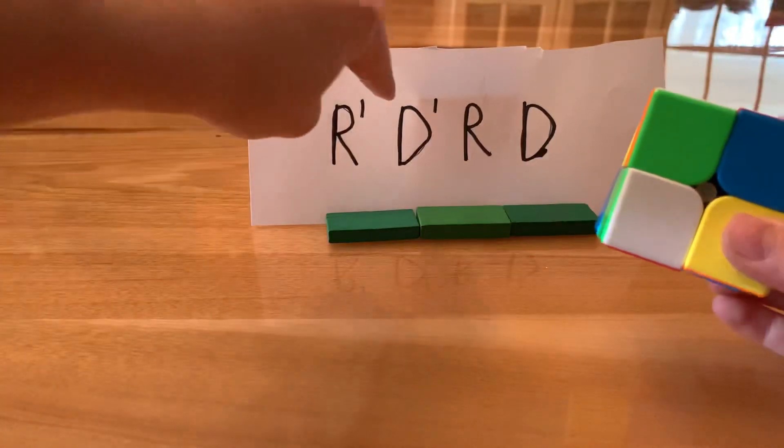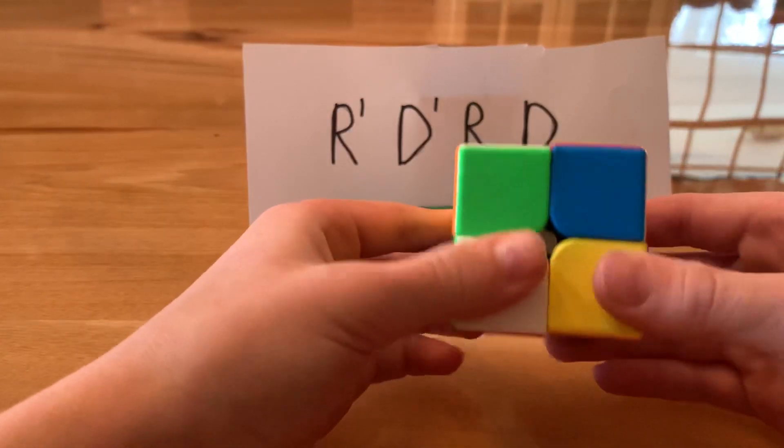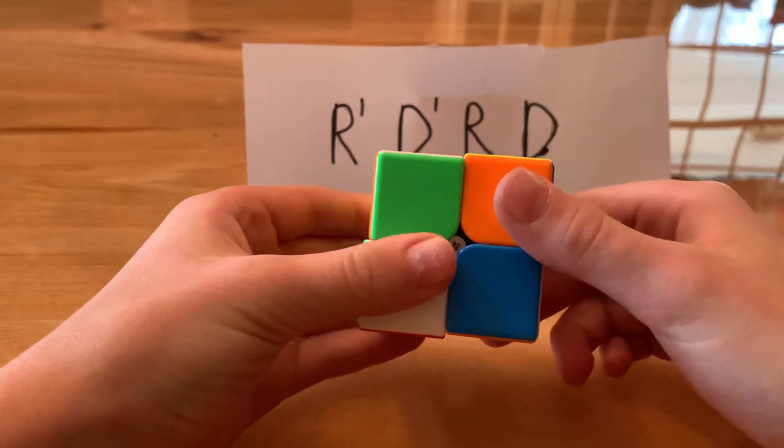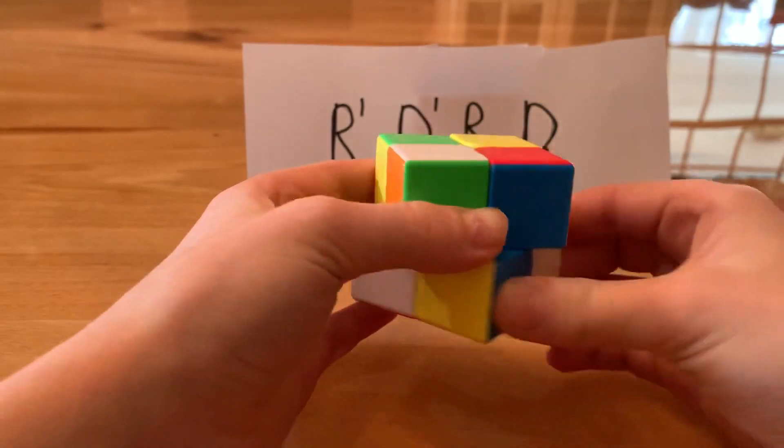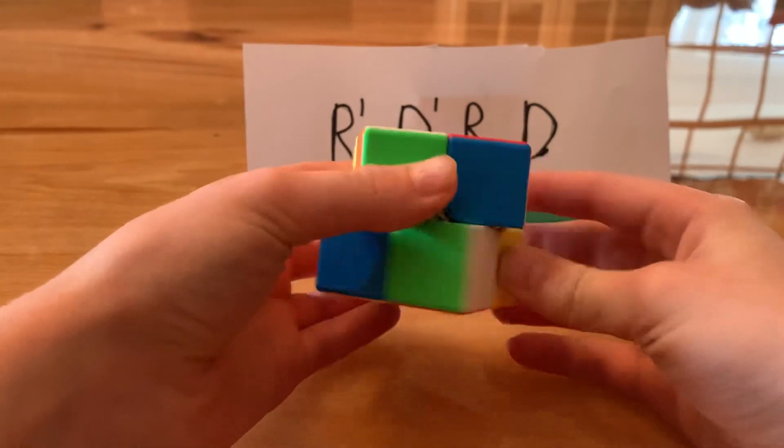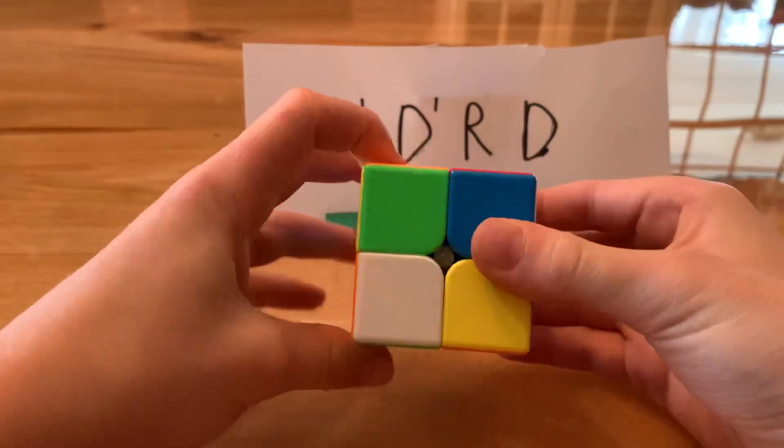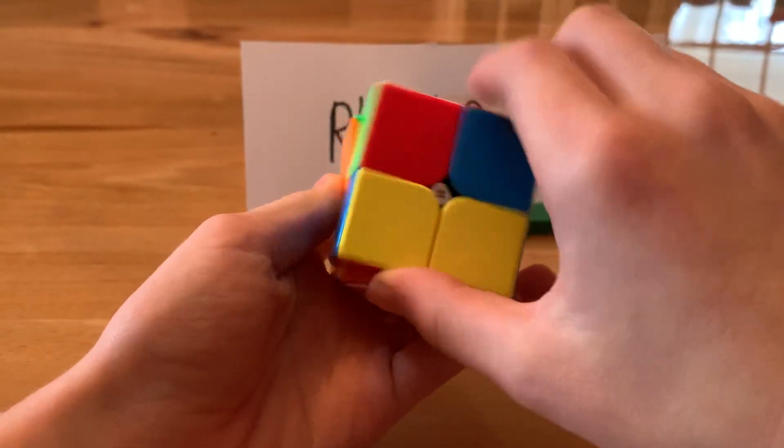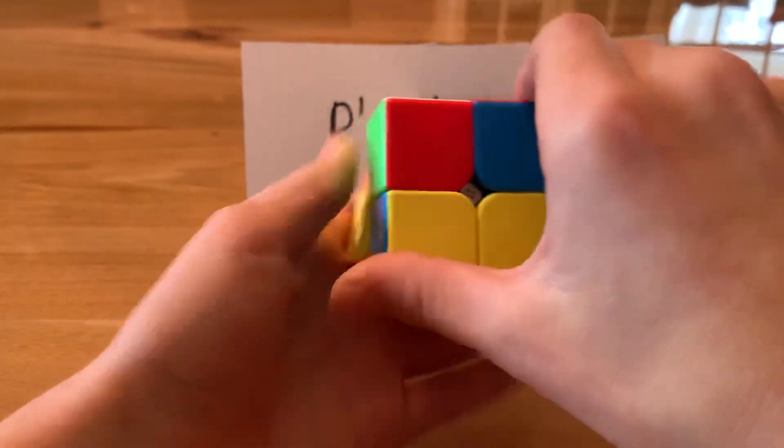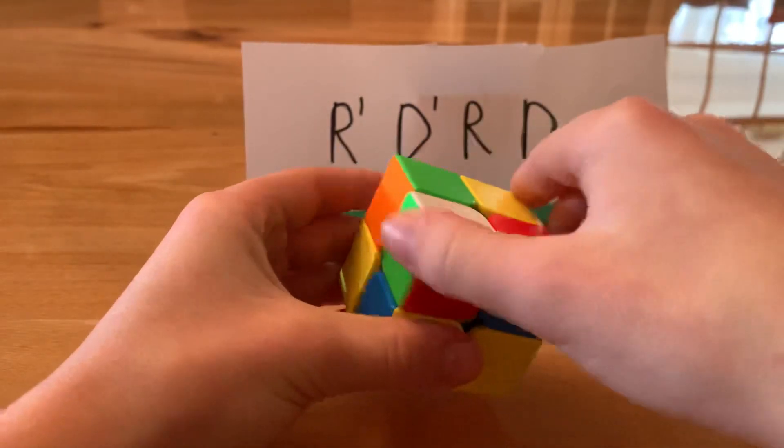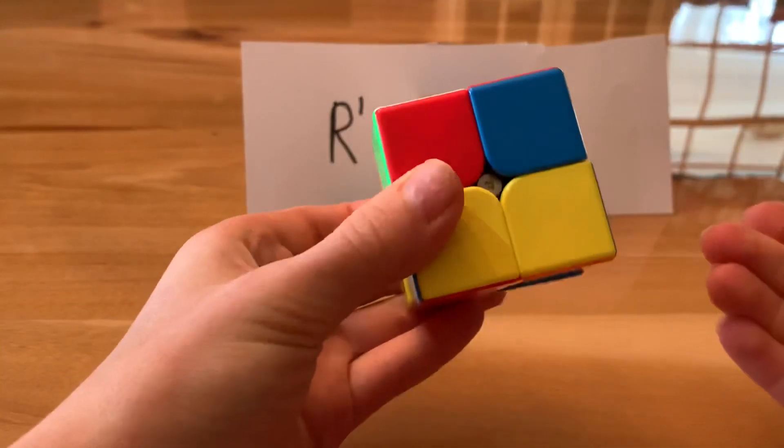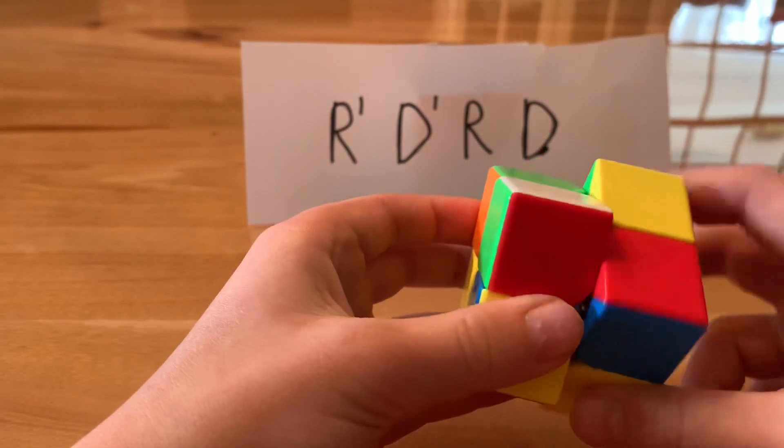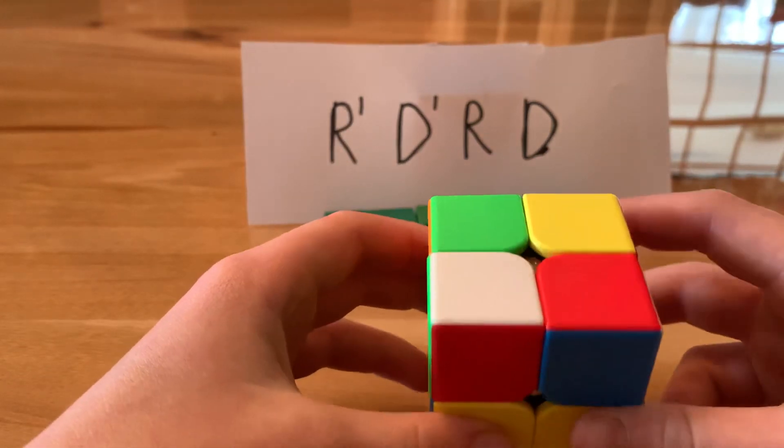And then the dash on top right there, that's basically prime, which is counterclockwise. So this would be R prime, R, D prime, D, L, L prime, F, F prime, and then up, U, U prime. So it's not that hard to understand. Instead of documenting every move that I do on the cube, you can use letters.